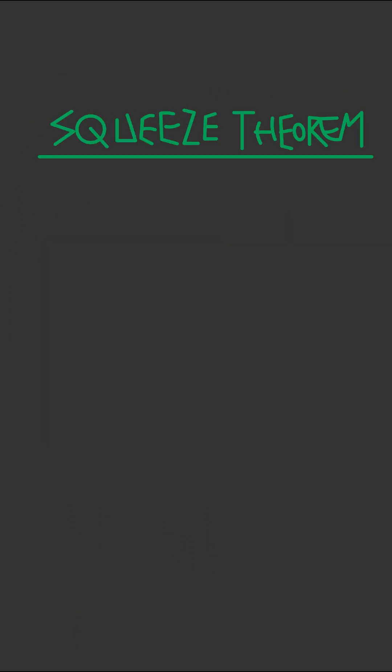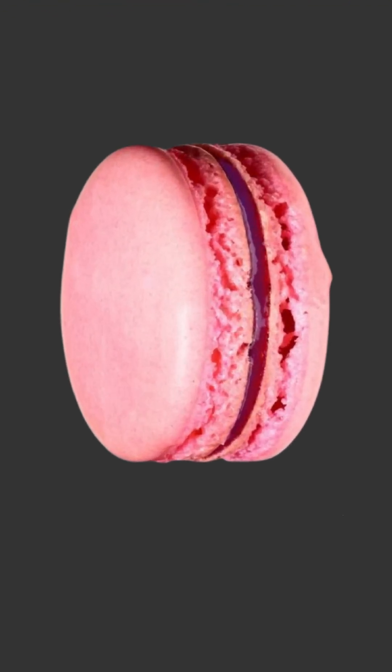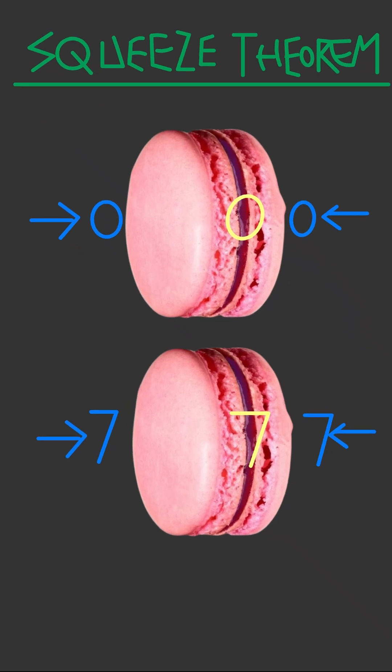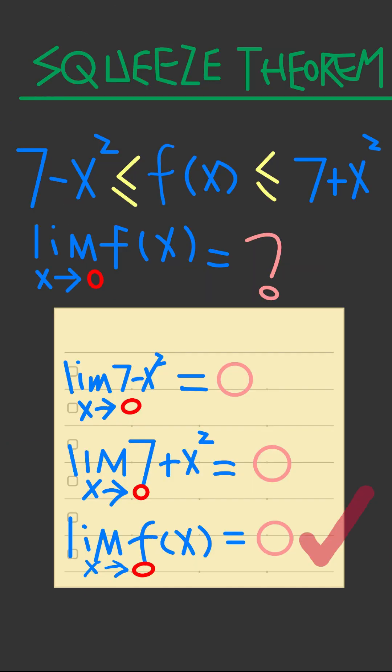Part three: Squeeze theorem. Scary name, huh? But it's actually delicious. Think of a macaroon - two crunchy sides squeezing a soft center. If both outsides go to the same number, the gooey middle has to go there too. Works for functions. You are squeezed. Well done.